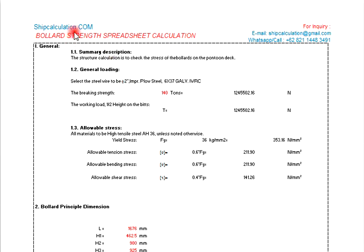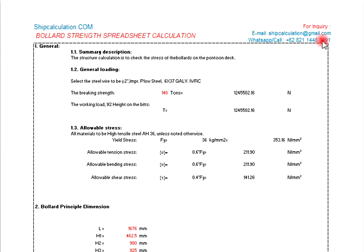Welcome to cipcalculation.com. For any inquiry, you can email us at cipcalculation@gmail.com, or WhatsApp/call us at +62 821 144 834 91.